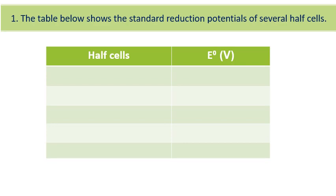Half cells and E° in volts. Aluminum 3+ gaining 3 electrons to deposited aluminum and the value of E° is negative 1.66.